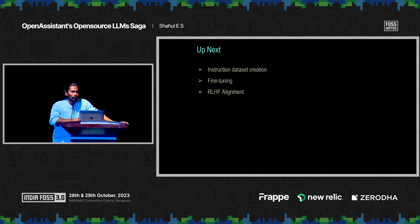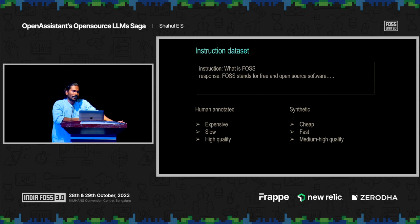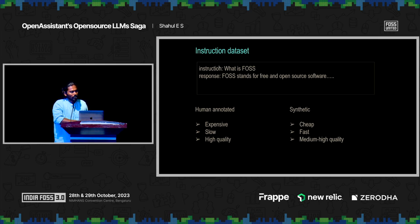We started with this vision and had the roadmap in place. For execution, we had three steps: the first was creation of instruction datasets to fine-tune and create such models. The second step was to actually do the fine tuning. An instruction dataset contains a set of instructions as the model's input, and a response as the expected output. Such a dataset will contain hundreds of thousands of these kinds of instructions.